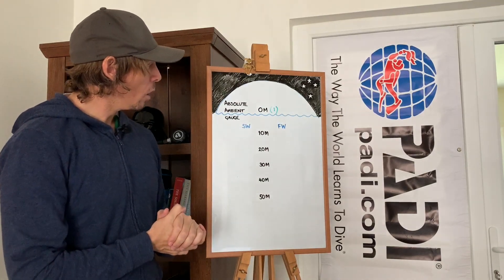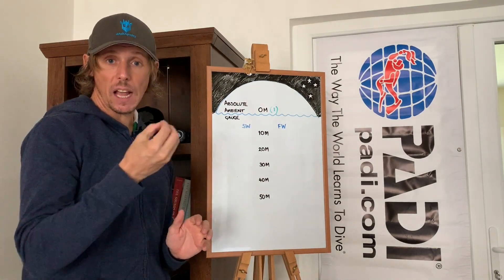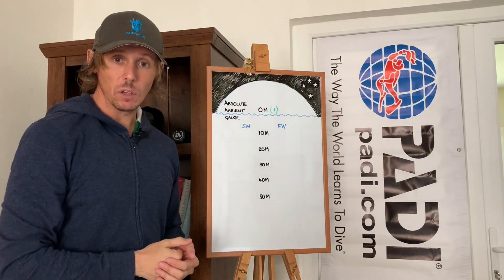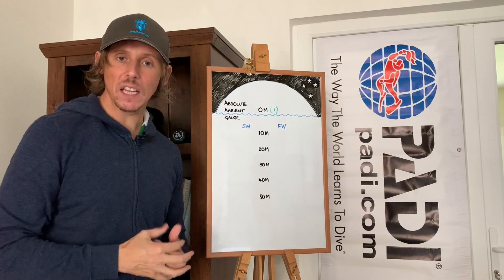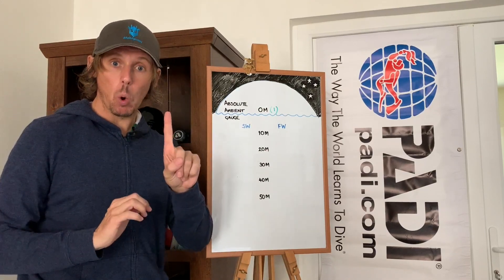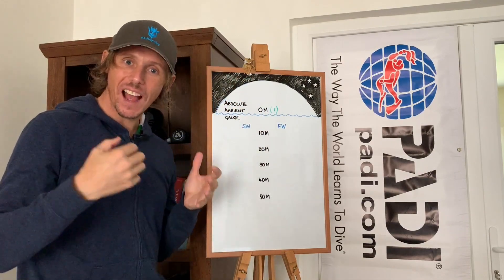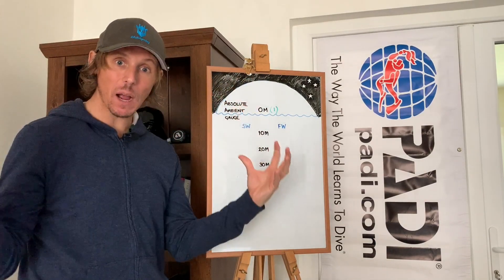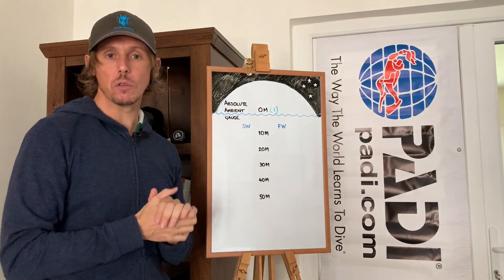What we've got to do first is assign the atmospheric pressure. At sea level, we consider the atmospheric pressure to be one — that's the value we give it. There is one atmosphere of pressure acting down on every object.